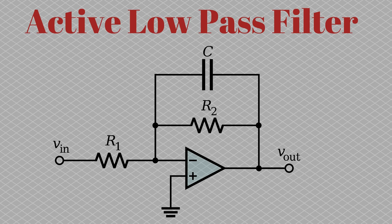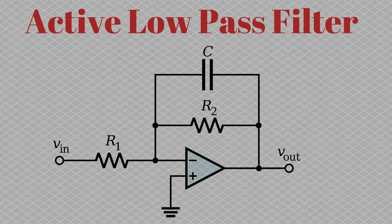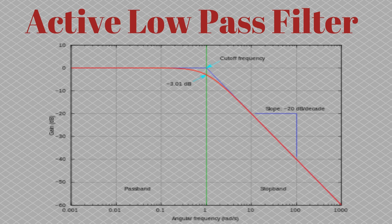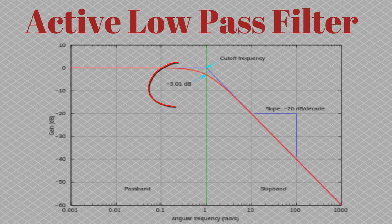This particular low pass filter is also known as a first order active low pass filter or a Butterworth filter. If you plot gain versus frequency on a graph for a variety of input frequencies, you get a graph that is almost flat in the passband region and falls off at the rate of 20 decibels per decade after the cutoff frequency, shown by the green line. At the cutoff frequency, the gain is about minus 3 decibels, though you can expect a slight error in practice.